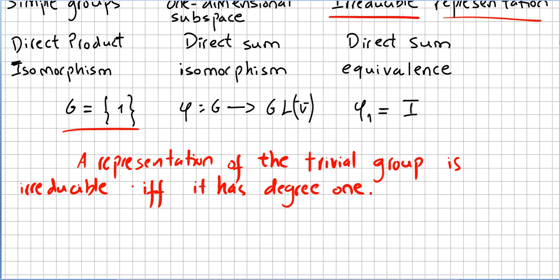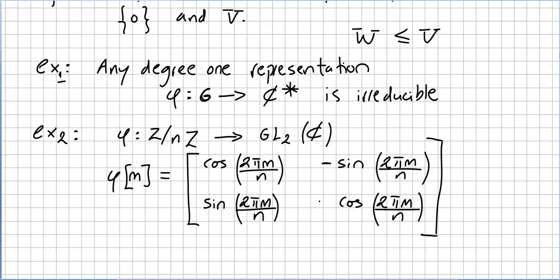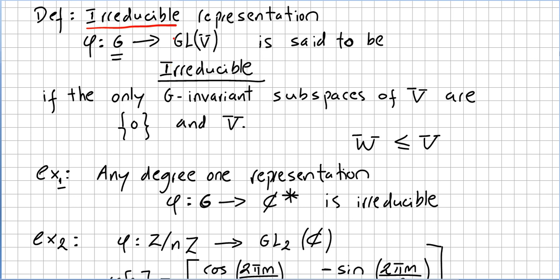To repeat the proposition without any confusion: a representation of the trivial group is irreducible if and only if it has degree 1. Now I give you a second example — a representation that is not irreducible. A representation phi from G to the general linear group is irreducible if the only G-invariant subspaces of V are the trivial ones.